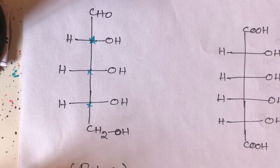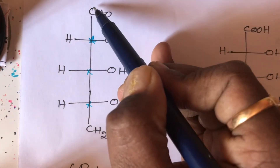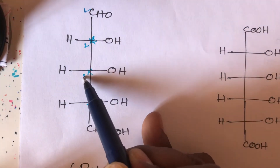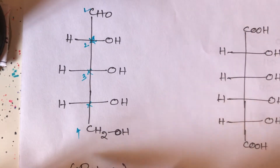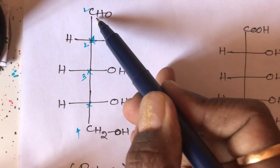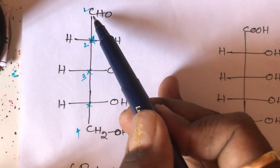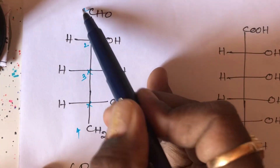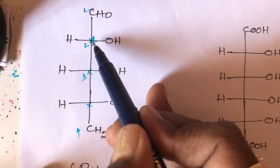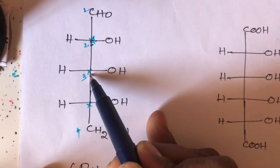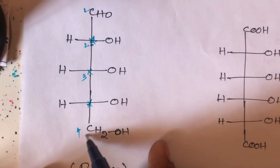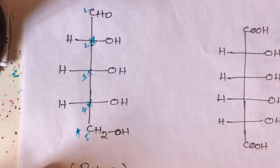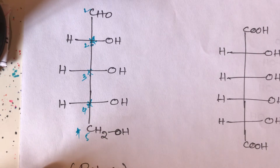Numbering should start from the aldehyde group — one, two, three, four, five — top to bottom only, not bottom to top, because the aldehyde group is at the top and the alcohol group is at the bottom. So the second carbon, third carbon, and fourth carbon are the three chiral carbons.